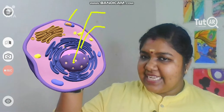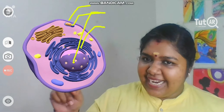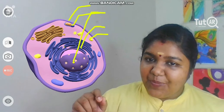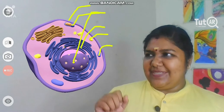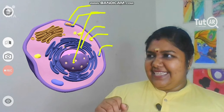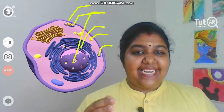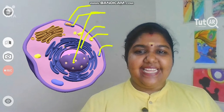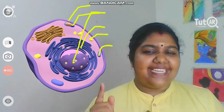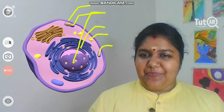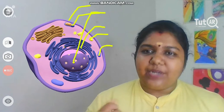I can also see mitochondria, ribosomes, and even small vacuoles. I can clearly confirm this is a eukaryotic animal cell with many important organelles.